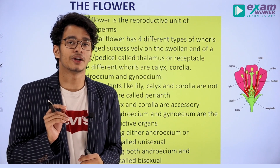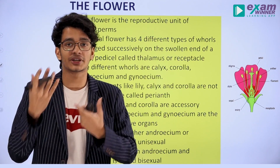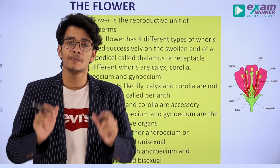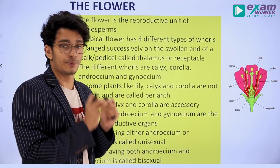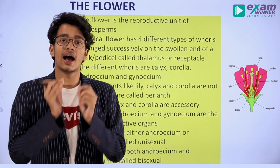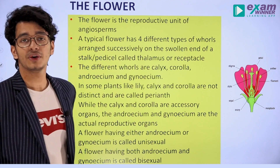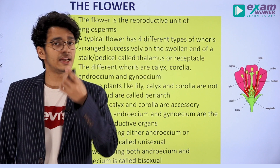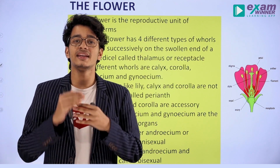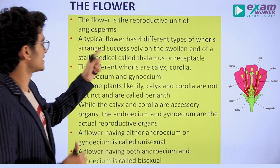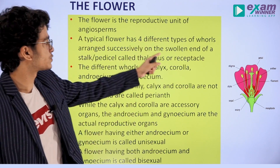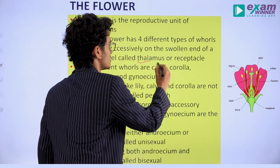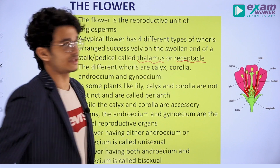We have reproduction in the gymnosperms and reproduction in the pteridophytes. There is no flower in those plant groups — only in angiosperms is the reproductive unit a flower. In the flower, there are four different whorls which are appendages, arranged successively on the swollen end of a stalk or pedicel, called the thalamus or receptacle.